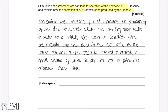Mark scheme: first mark for increased permeability of the distal convoluted tubule and collecting ducts to water; second mark for more water being reabsorbed; third mark for a small volume of urine being produced; final mark for it being more concentrated than usual.